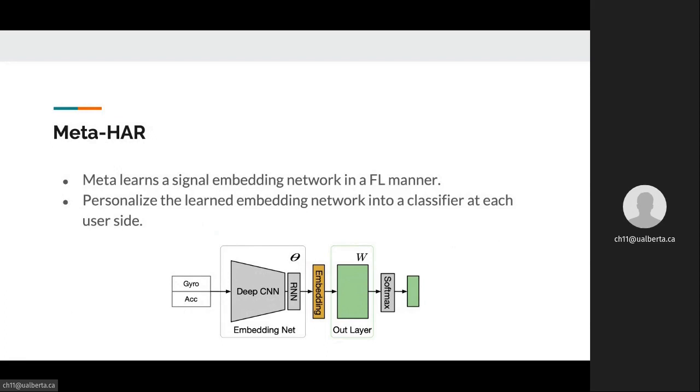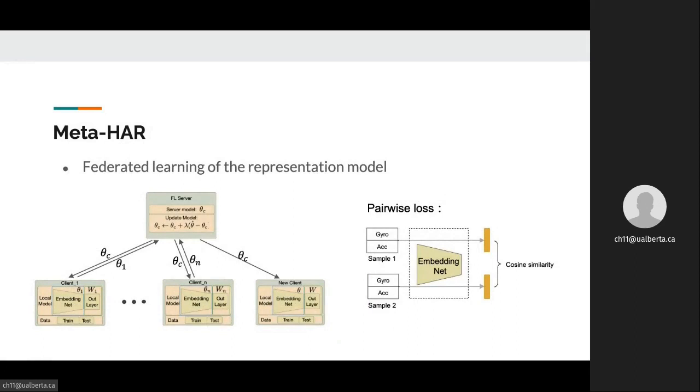we propose the Meta-HAR framework. In Meta-HAR, the classifier is composed of two parts: the embedding network, which embeds the input signal into a real-valued vector representation, and the output layer, which predicts the target activity type. Instead of learning a global classification network for all activity types, we first learn a common deep representation model parameterized by theta through a federated model-agnostic meta-learning framework across all users. Then, the learned representation is fed into an output layer, separately learned by each individual user to conform to their own activity set and output dimension.